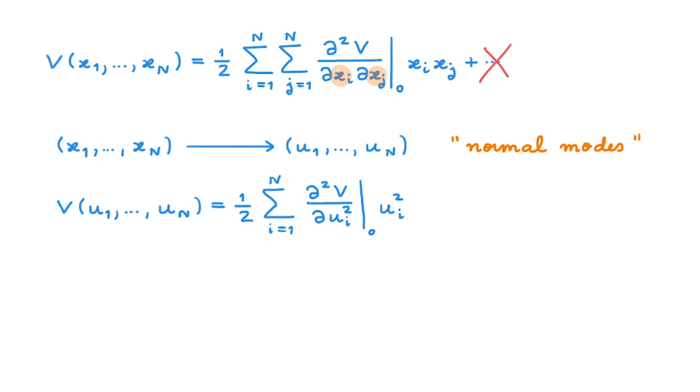These new coordinates u are a concept that appears in many branches of physics and are called normal modes. Using this approach, many interesting systems can be described by simply knowing how to solve the one-dimensional harmonic oscillator.